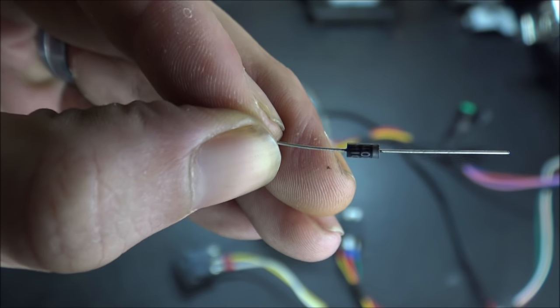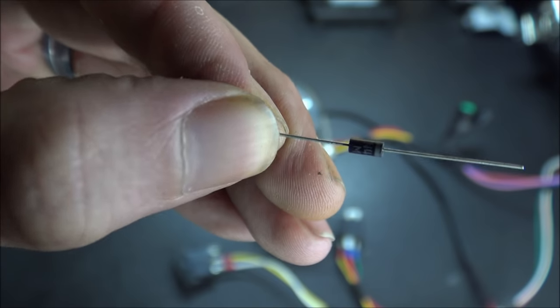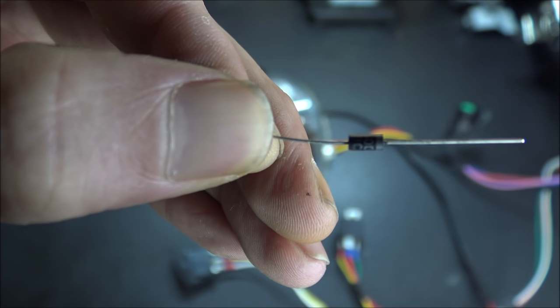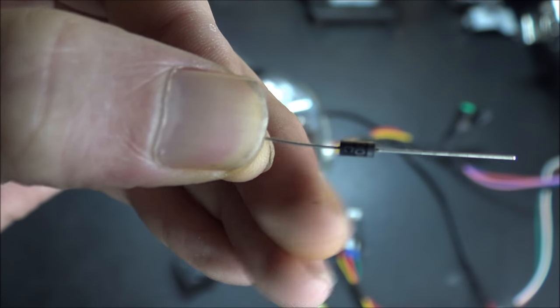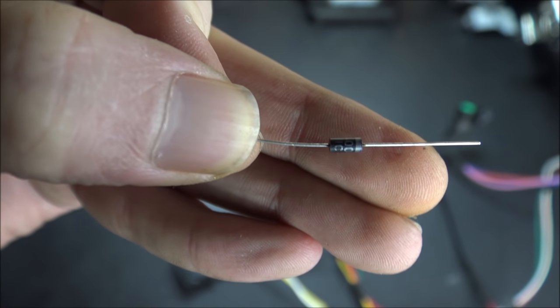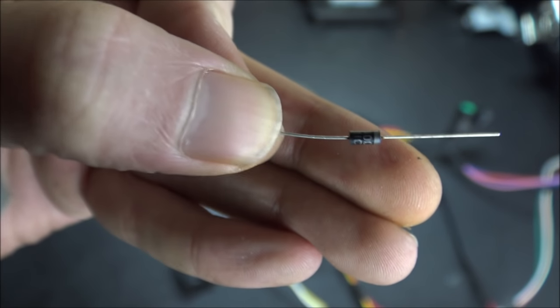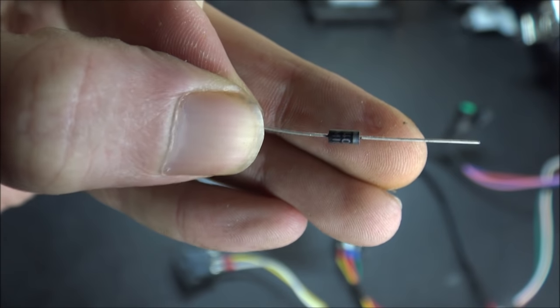This is the diode. This is known as a rectifier diode. Some people call them a blocker diode. These little small ones here are one amp diodes. So you have to use these in conjunction with the relay, otherwise you'll burn these things up.